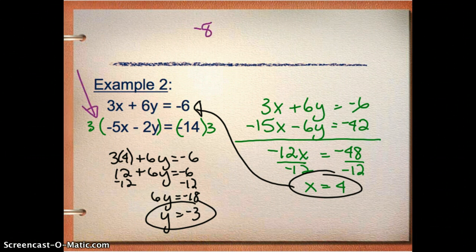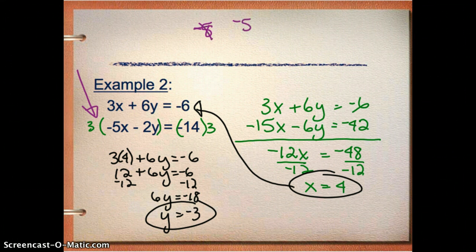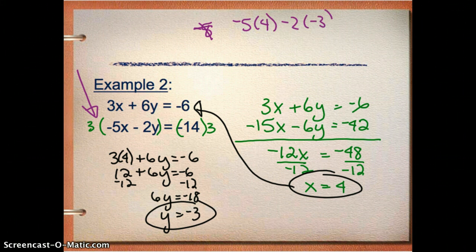So I'm going to go into my second equation. And I've got negative 5 times x, which is 4. Negative 5 times 4 minus 2 times negative 3. I want to see if that really equals negative 14. So that's negative 20 minus negative 6, which is plus 6. That does equal negative 14. So it looks like I solved it correctly.